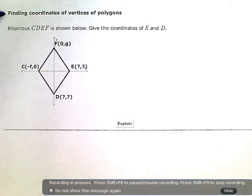Finding coordinates of vertices of polygons. Rhombus CDEF is shown below. Give the coordinates of E and D.